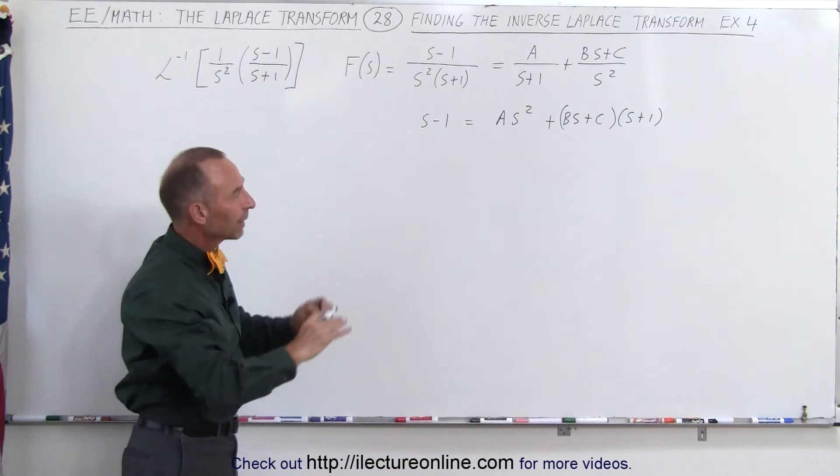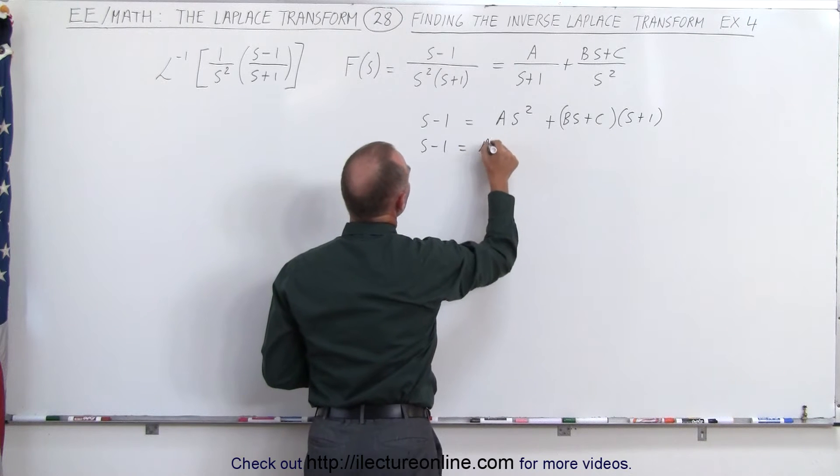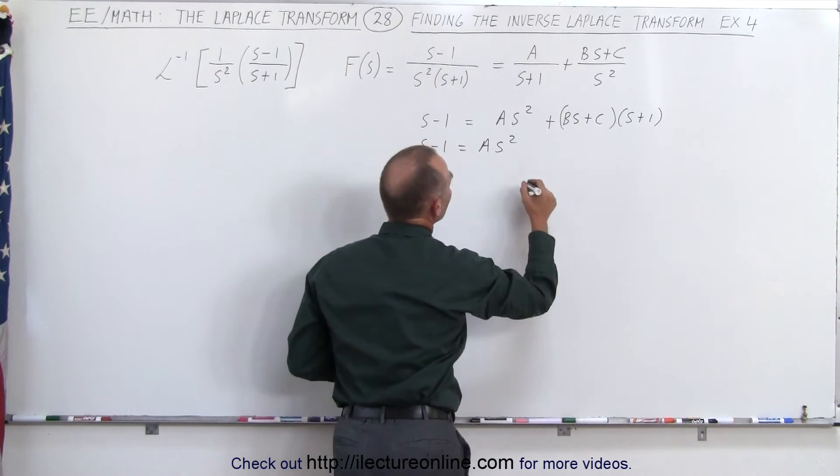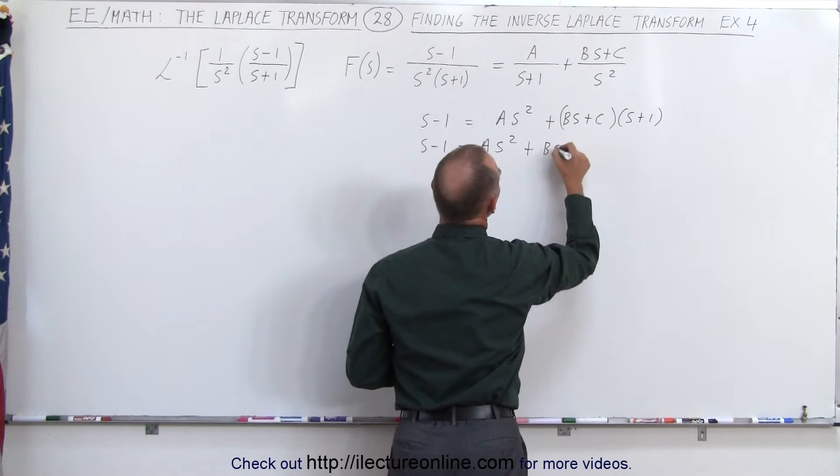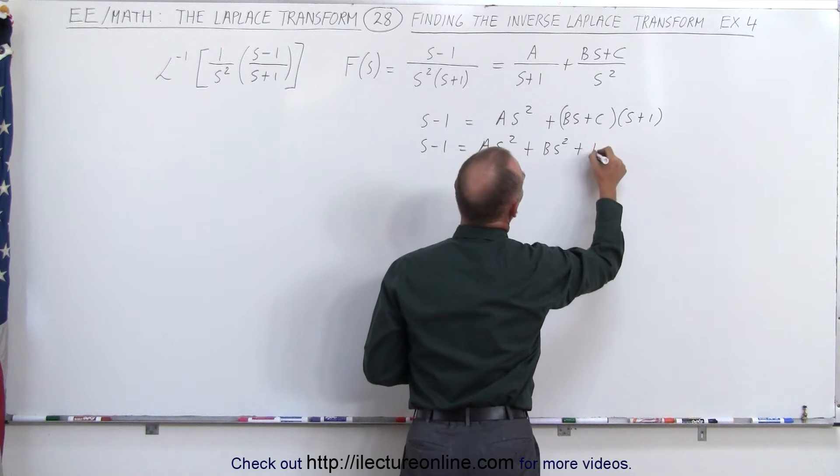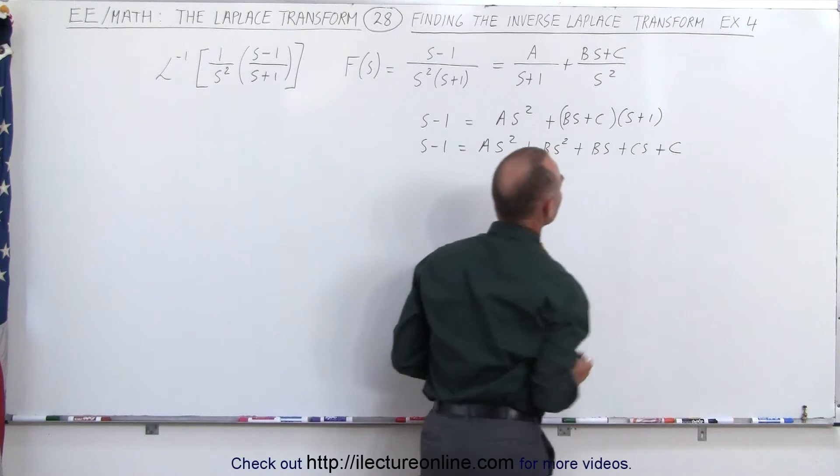Simplifying this a little bit by getting rid of parentheses, we get s minus one equals A s squared plus Bs squared plus Bs plus Cs plus C.